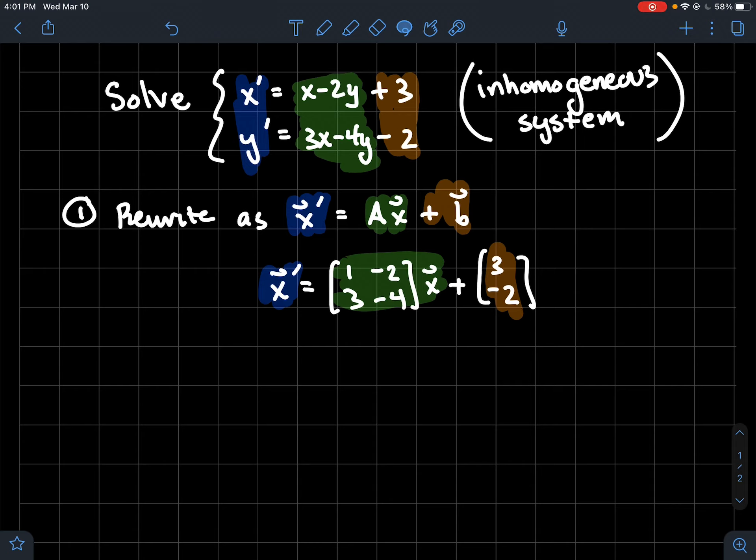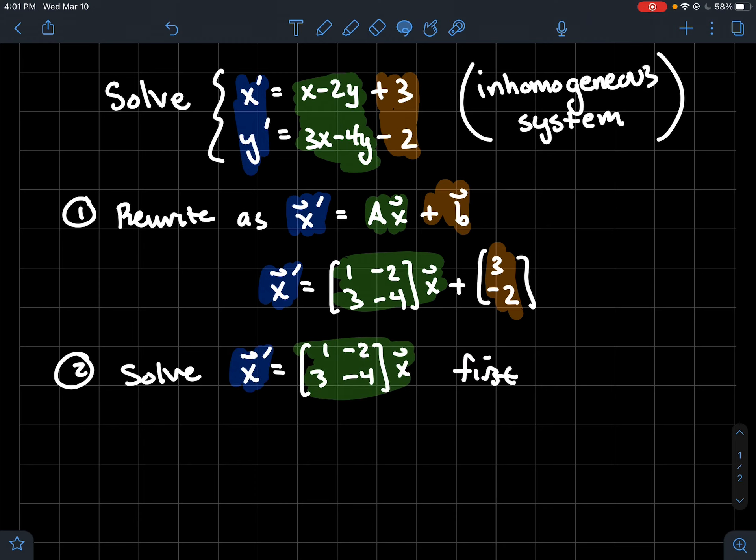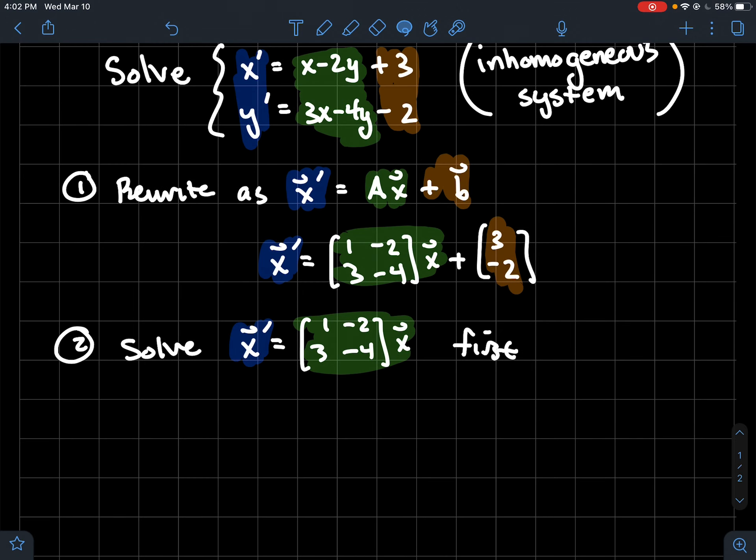From there, step two: we're just going to forget about the orange, forget about the b, forget about the thing that makes this inhomogeneous. Let's just solve the usual system x prime equals Ax first. To do that, we're going to focus on that matrix one negative two three negative four. By the way, this is called the homogeneous system.